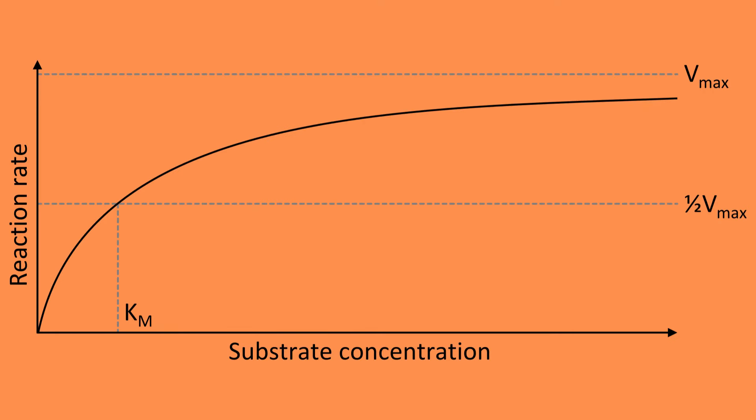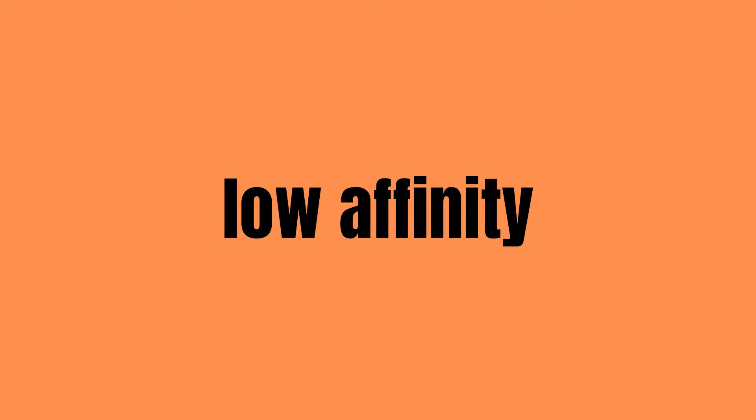The Michaelis constant Km represents the substrate concentration at which the enzyme is working at half of its maximum velocity. If Km is large, it means that the enzyme has a low affinity for the substrate and requires a higher substrate concentration to reach its maximum velocity.